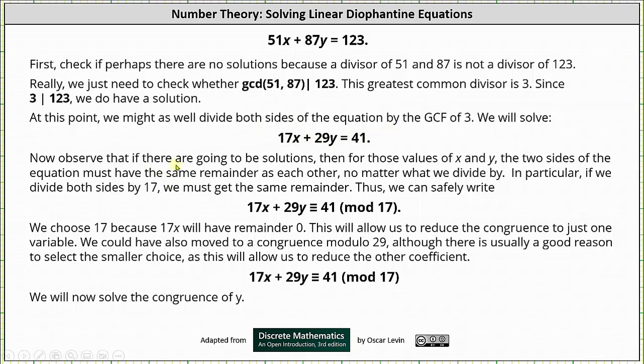Now observe that if there are going to be solutions, then for those values of x and y, the two sides of the equation must have the same remainder as each other, no matter what we divide by. In particular, if we divide both sides by 17, we must have the same remainder.